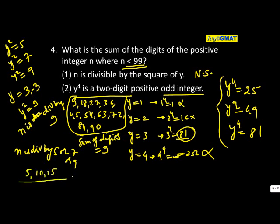Can I take the value of n as 5, 10, 15—is it giving me unique sum of digits or different sum of digits? Think about it. Or I can take 7, 14, 21, or I can take 9, 18, 27 and so on. Is the sum of digits always unique or different? Different.